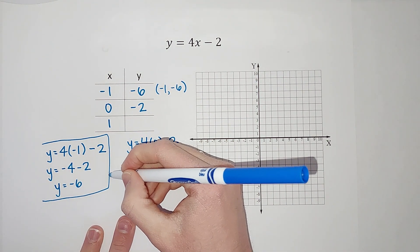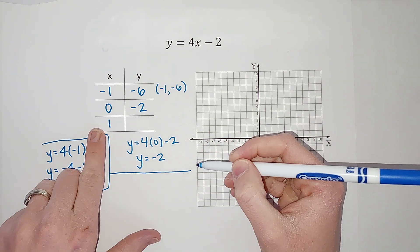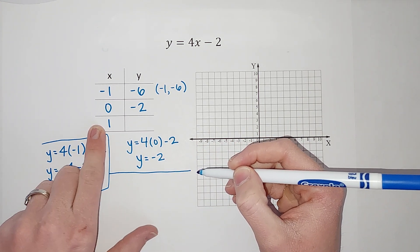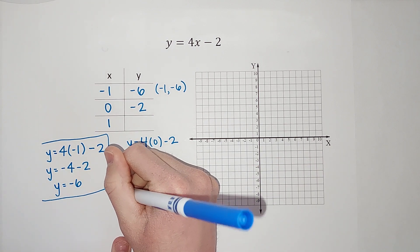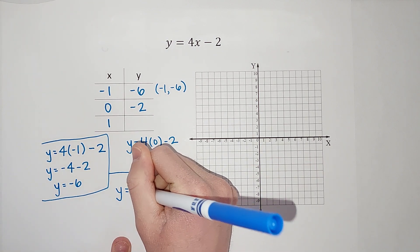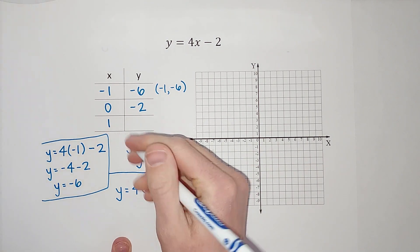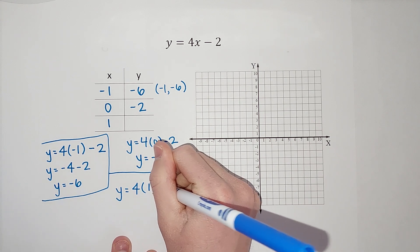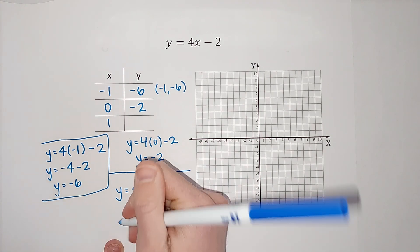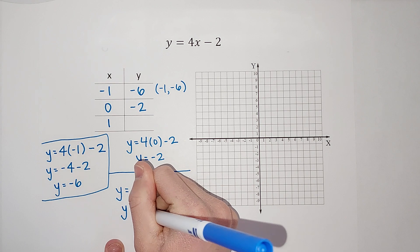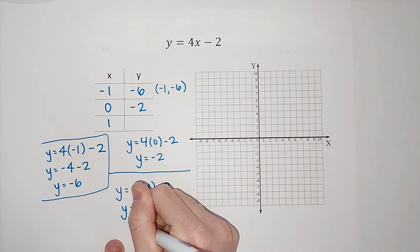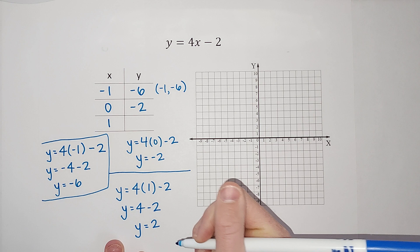Last one. We want to know what y is when x is 1. So we're going to do y equals 4 times 1 minus 2. 4 times 1 gives me 4. We're subtracting 2. 4 minus 2 gives me 2.